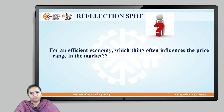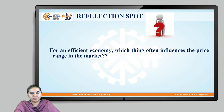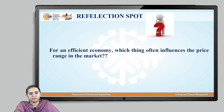The thing which often influences the price range in the market is the scarcity of the resource. Consider a fruit which is out of season and not possible for the market to keep in stock. In such a situation, the price of that particular fruit will be much higher than the other available fruits in the market. The main challenge in front of the market will be to retain its efficiency while coping up with the higher price of the fruit. So for an efficient economy, the thing which often influences the price range is nothing but the scarcity of that particular resource or product.